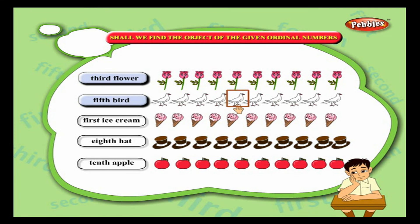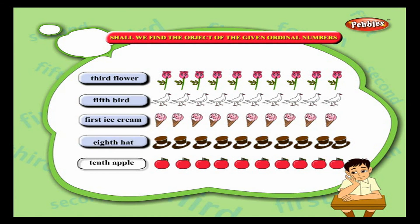First ice cream: let us find the first ice cream. Start counting: first — this is the first ice cream. Eighth hat: where is the eighth hat? First, second, third, fourth, fifth, sixth, seventh, eighth — this is the eighth hat.